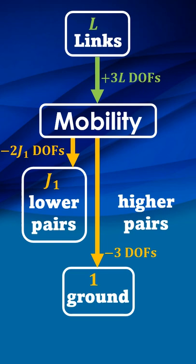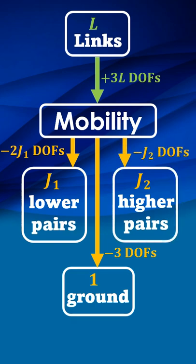Each higher pair blocks one degree of freedom. If J2 higher pairs are used, J2 degrees of freedom are consumed by the higher pairs.